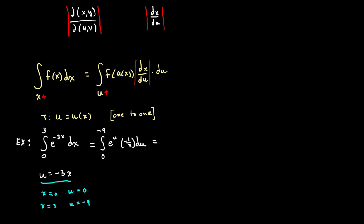However, if I force this now to have a positive bounded orientation, so I go from small to large, then I have e to the u, then I'll have negative one-third, but I'm going to put that into absolute value to maintain the equality.